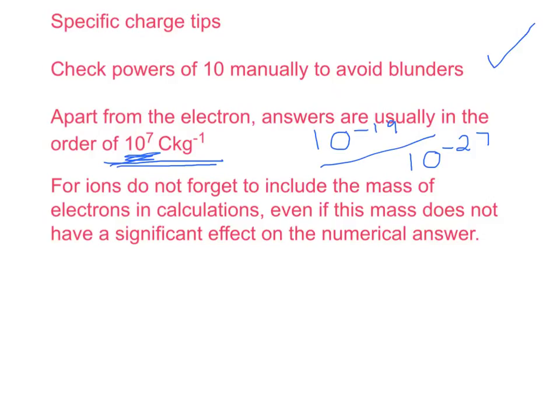And here's the last thing we learnt on the last little bit. For ions, you've got to include the mass of the electron in the calculation. Chances are it won't affect the numerical answer overall, but if you don't include them, the examiner will class it as a physics error, and you then won't get any marks for that question. Right, now have a go at the specific charge worksheets, and don't forget to bring that with you next lesson. Thank you.